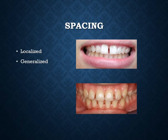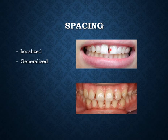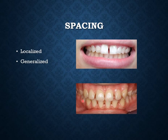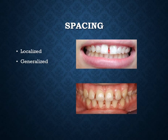Spacing occurs when a dental arch has spacing beyond the accepted range. It is either localized — where there is a space between specific teeth, such as a central diastema — or generalized, affecting the whole dental arch, mostly caused by abnormal soft tissue function like tongue thrust.